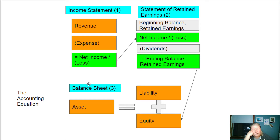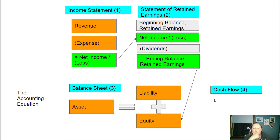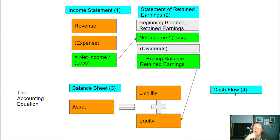There is a fourth statement called the statement of cash flows. It's generally covered later in the semester because it's more complex. Its purpose is to tell you whether your cash balance went up or down over the course of the year and why. You need information from both the income statement and the balance sheet to complete it.